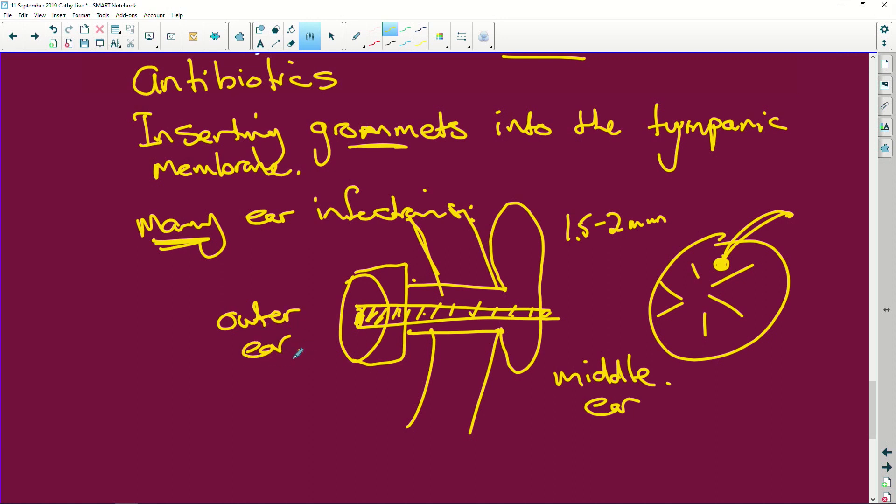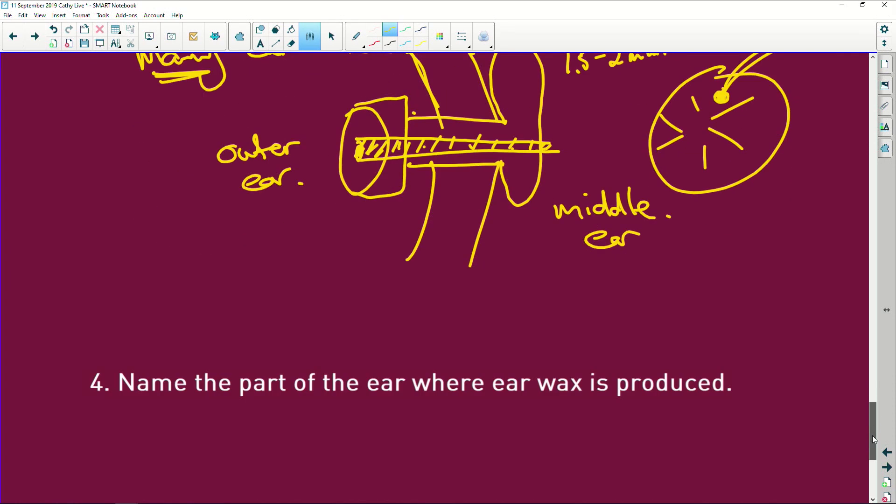All right. Now, if somebody has a grommet, you should not be swimming and you should definitely not be anywhere where there's dirty water. So, no bathing. You can shower. And if you wash your hair, you've got to be careful because you've now got this open hole into your middle ear and you don't want bugs in there. So, generally, kids that have grommets are going to then swim with earplugs in. And also adults, by the way.